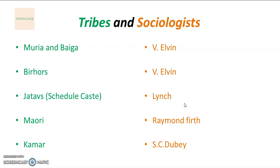The Muriya and Baiga tribal community was studied by V. Elvin. Birghurs is also a tribe in Jharkhand state, also studied by V. Elvin. Jados is a scheduled caste community studied by Lynch — these Jados are in Delhi. Mayuri is also a tribe in New Zealand, studied by Raymond Firth.